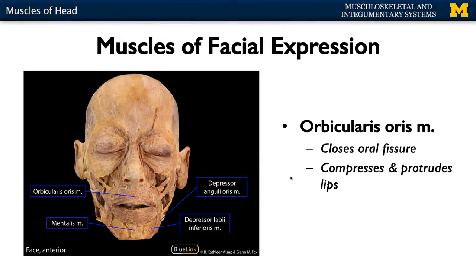The last muscle of facial expression to know is your orbicularis oris. It's really your first sphincter associated with your gastrointestinal system — it allows you to close your oral fissure or your lips in order to allow food to head back towards the pharynx and eventually the rest of the GI system. Not only does it close the oral fissure, it also plays a role in compressing and protruding your lips — it allows for puckering.